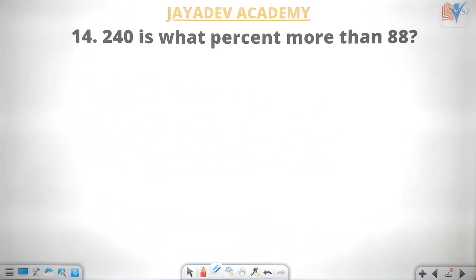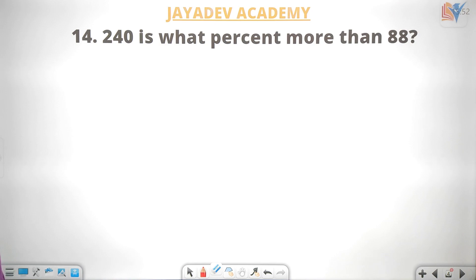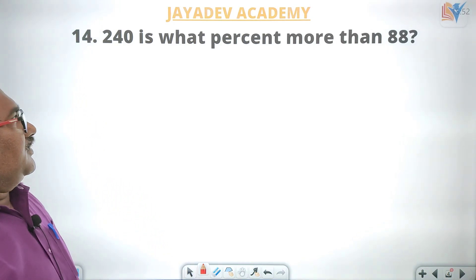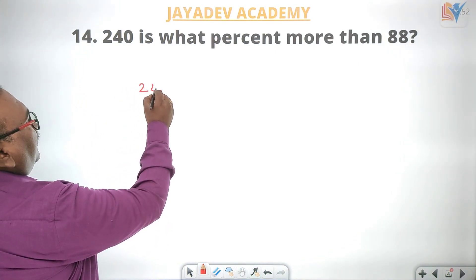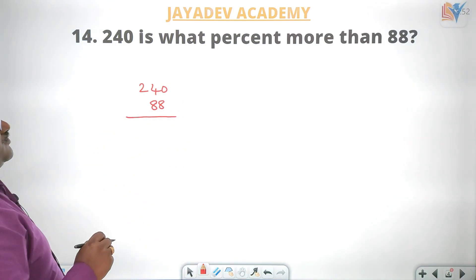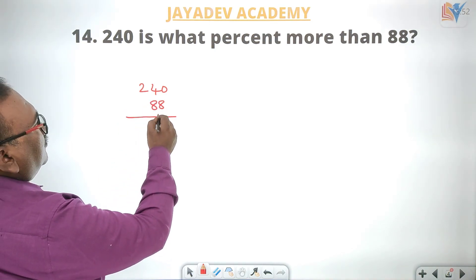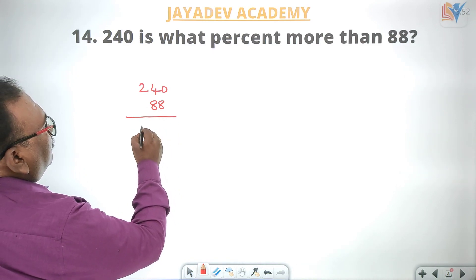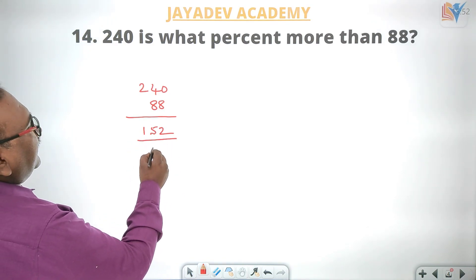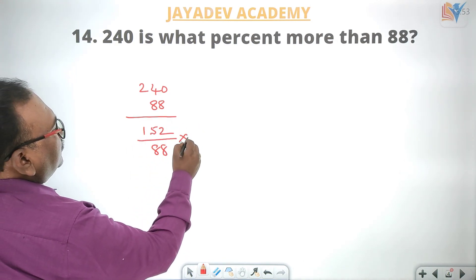Next question: 240 is what percentage more than 88? The difference is 240 minus 88, which equals 152. So 152 divided by 88 — more than 88 — so 88 into 100.